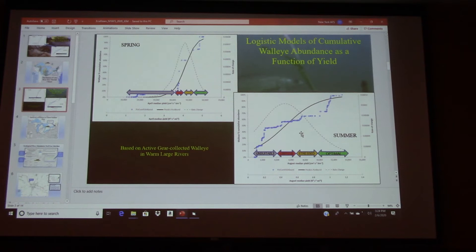The critical zone is right at the inflection point of these curves where for any unit of change in yield, you're going to get the greatest change in the population of the fish.